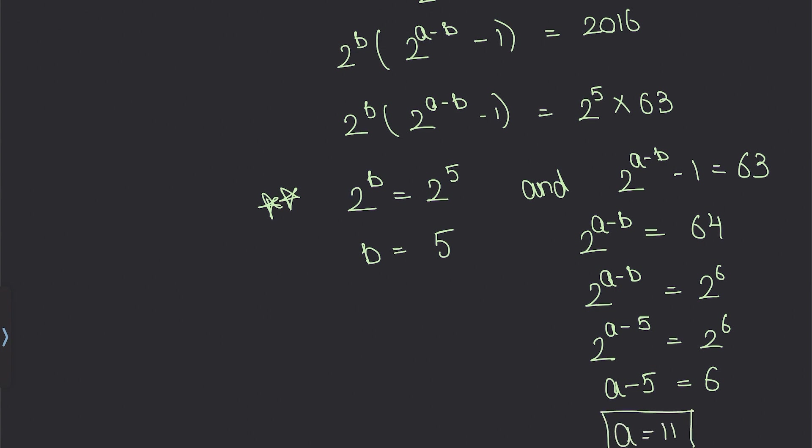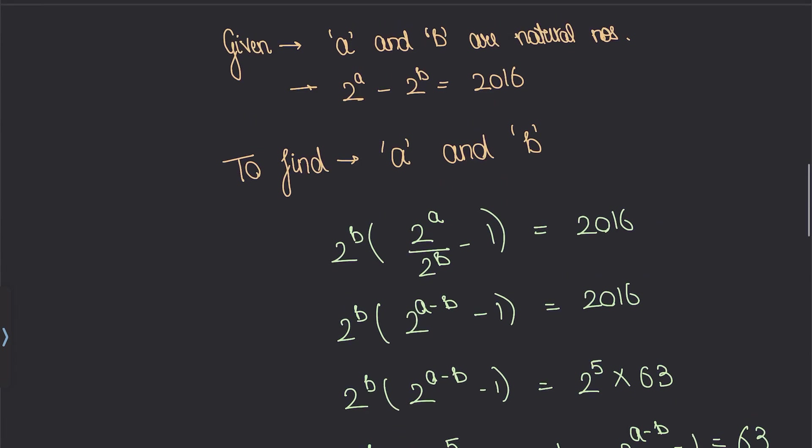So you see, from this single equation we were able to deduce the values of both a and b. So a = 11 and b = 5. Hence, this is our answer. Thank you.